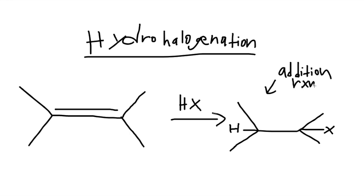An addition reaction is a reaction that takes the double bond of the alkene and makes it into a single bond on both ends — hydrogen and the halogen element. The addition comes from whatever you're adding; in this case, we added the hydrogen and the halogen element. All we do is take out the double bond and make it into a single bond. This is called hydrohalogenation, where you have a hydrogen and a halogen element.